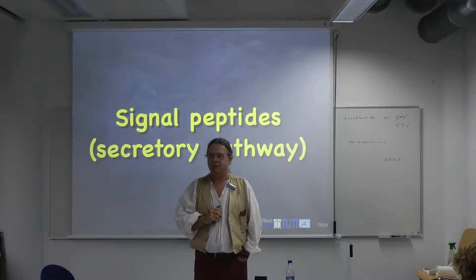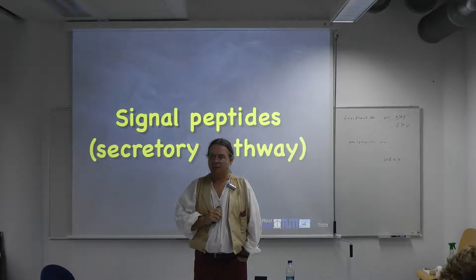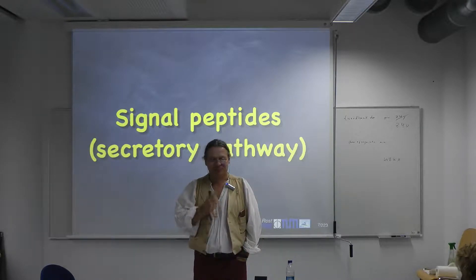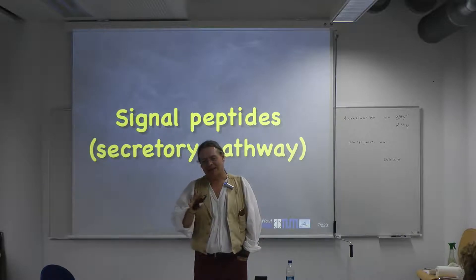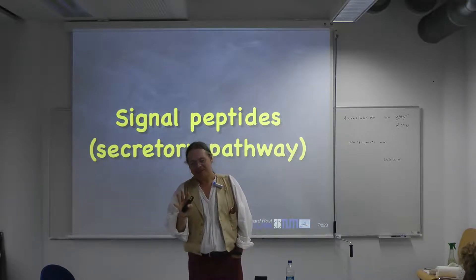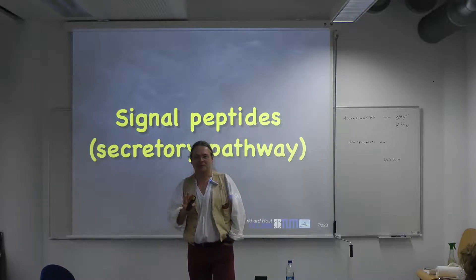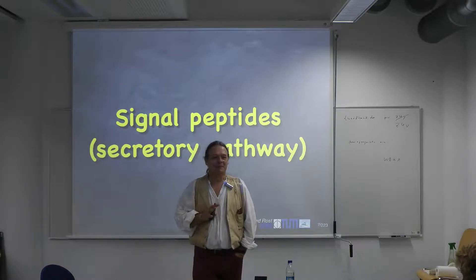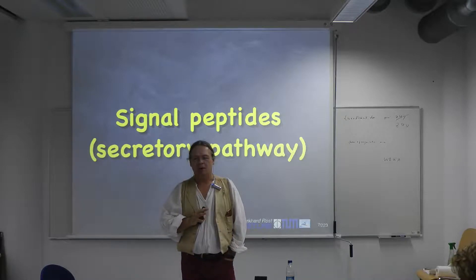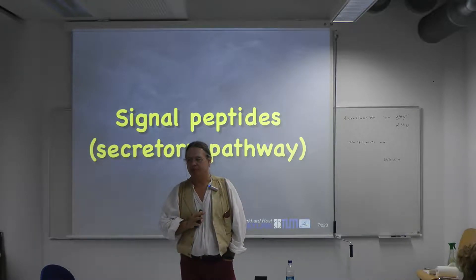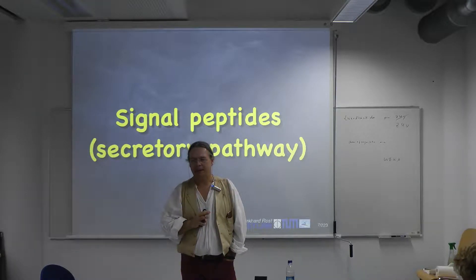The answer is C. The problem is we cannot write down the options easily and I cannot always remember what I said. A was 'zip code' — I remember that. So: is the signal peptide the kind of zip code relevant for putting proteins into different subcellular localizations? C is for one particular subcellular localization.